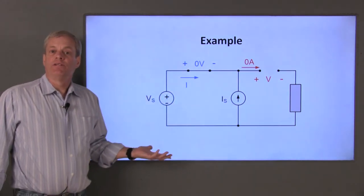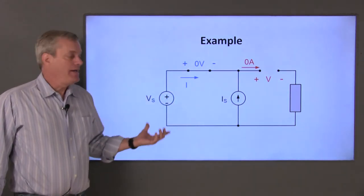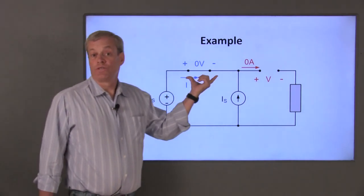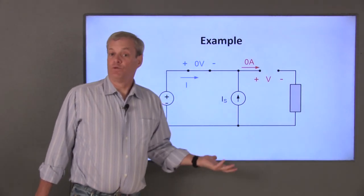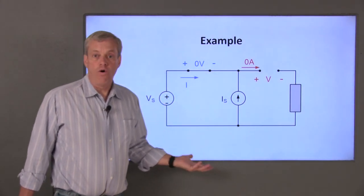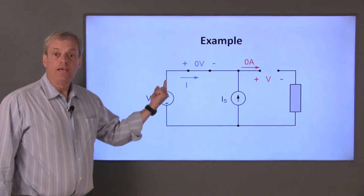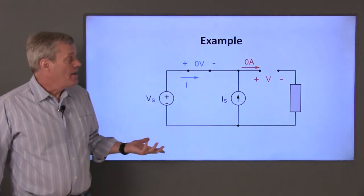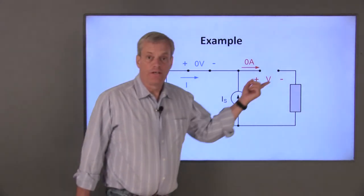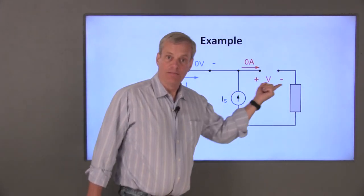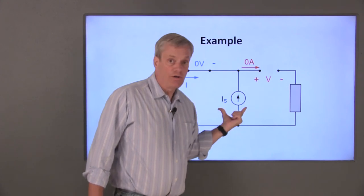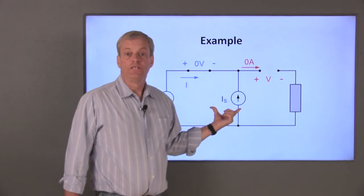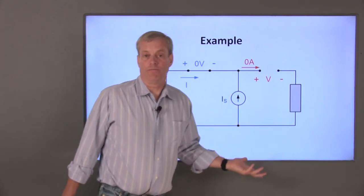Keep in mind the similarity between an ideal voltage source and a short circuit: the voltage across the voltage source is known, but nothing is known about its current. Likewise, an open circuit is analyzed similarly to a current source — the current is known, but the voltage difference is a variable.